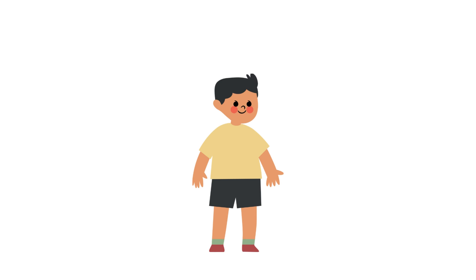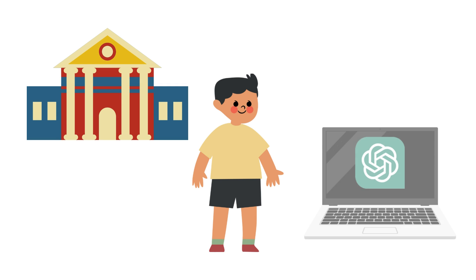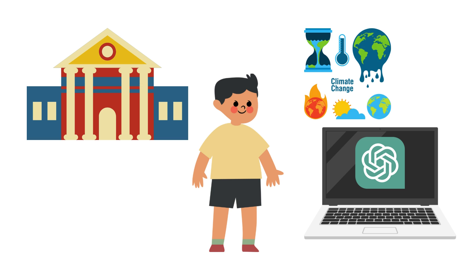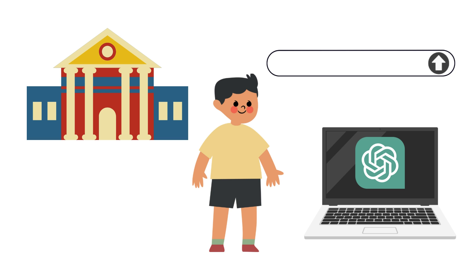Meet Ash, a first-year arts undergraduate student who has just started using ChatGPT, an AI tool, for school. Ash is completing a project related to climate change, and they are excited to use ChatGPT for the project. ChatGPT is an exciting tool because it can potentially save users a lot of time and effort. By inputting a simple prompt, users can get an elaborate response within seconds.